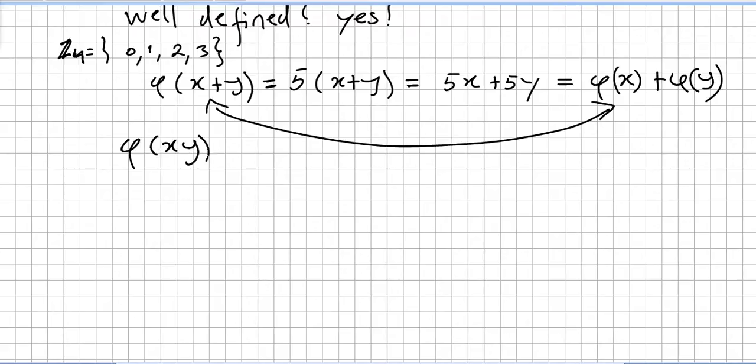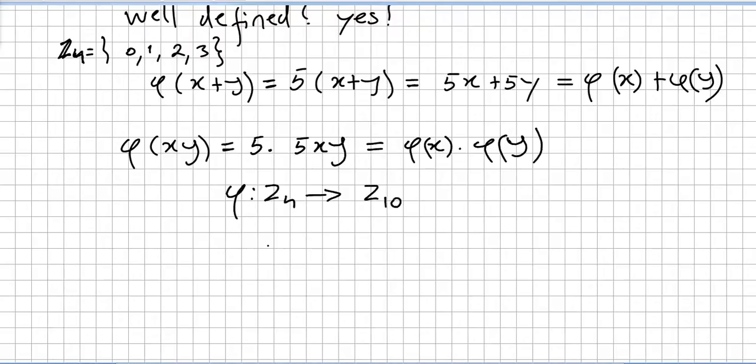What about phi of (x times y)? So phi of (x times y) should be 5 times (xy). And this is clearly phi(x) times phi(y). So multiplication is preserved. Addition is preserved. So the mapping from Z_4 to Z_10 that takes x to 5x is clearly a ring homomorphism.